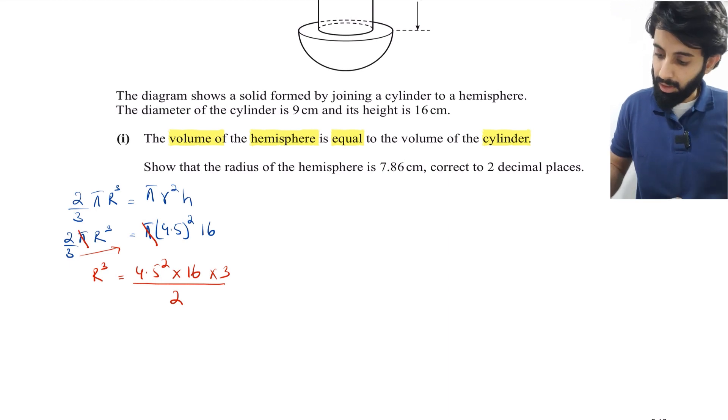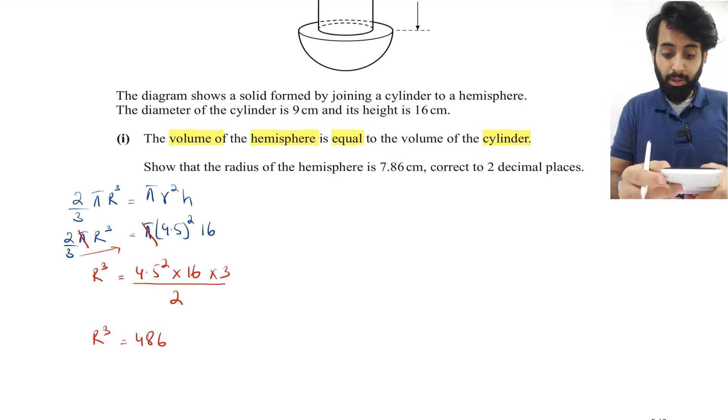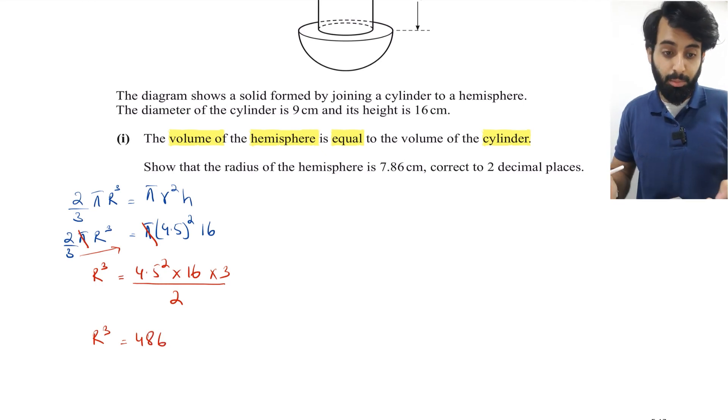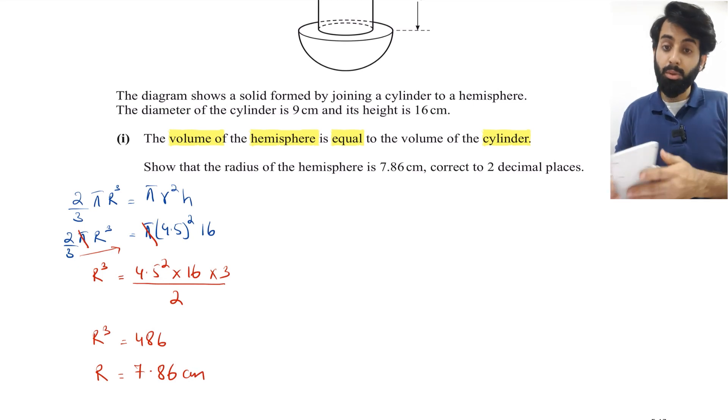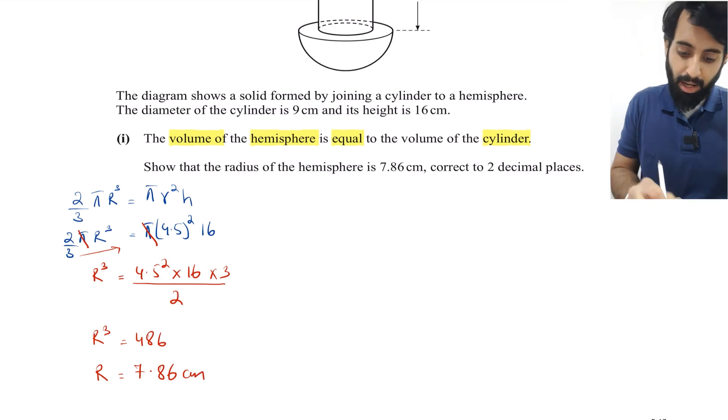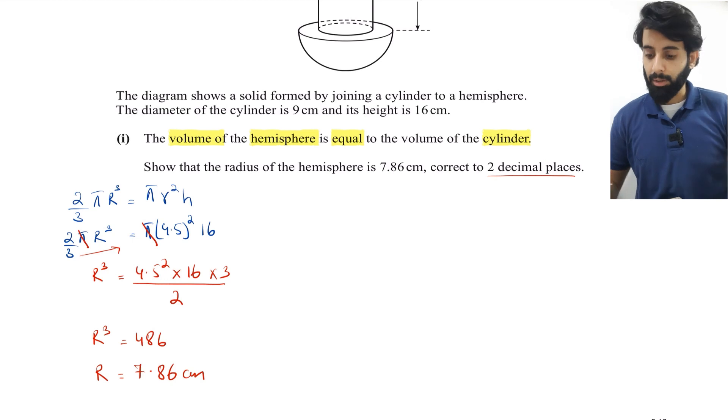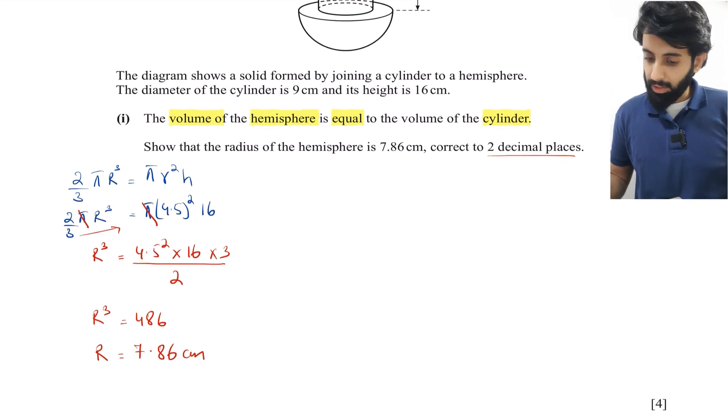R³ equals 486. In order to get the value of R, you need to take the cube root, which is indeed equal to 7.86 cm correct to two decimal places. That was part one - fairly simple.